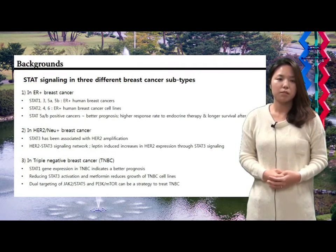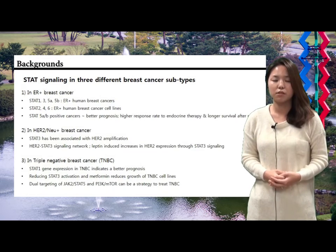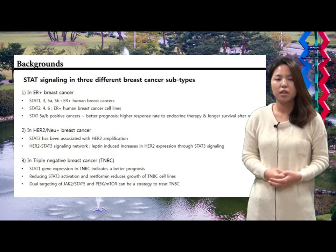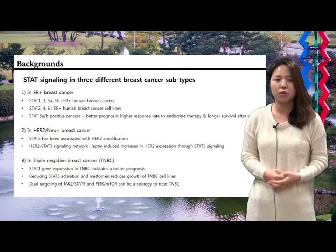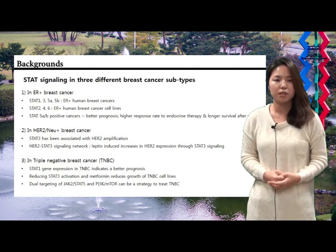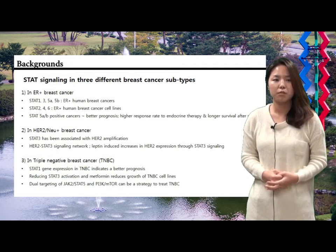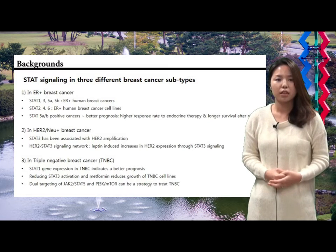In ER positive breast cancers, STAT 1, 3, 5A, and 5B are all expressed, and STAT 2, 4, and 6 are also expressed in ER positive breast cancer cell lines. One study reported that STAT 5A and 5B positive cancers demonstrated a better prognosis with a higher response rate to endocrine therapy and longer survival after relapse. In contrast, there were no associations between STAT 3 expression and response to therapy or prognosis. Many other papers also supported the positive correlation between STAT 5 expression and improved response to endocrine therapy in ER positive breast cancer.